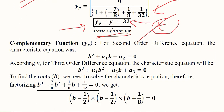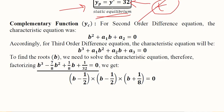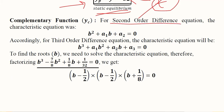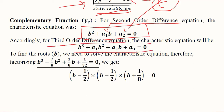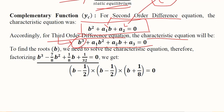The other part of the solution is the complementary function. Referring again to the second-order difference equation, which had a characteristic equation with coefficients a1 and a2, the third-order difference equation gives a characteristic equation of degree 3 — a cubic function. Substituting the values of a1, a2, and a3 into the characteristic equation, we obtain this cubic function.